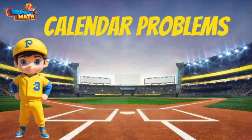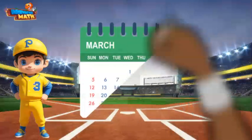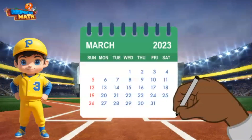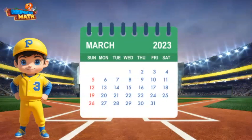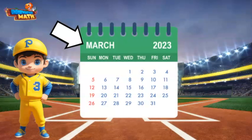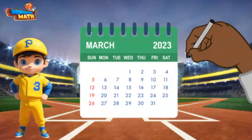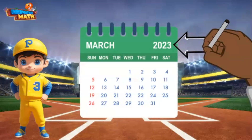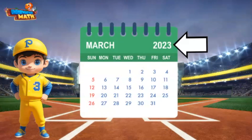I'm sure you can help me out. First, let's look at the parts of a calendar. Here the calendar is showing us that the month of the year is March, and speaking of years, here the calendar tells us that the year is 2023.